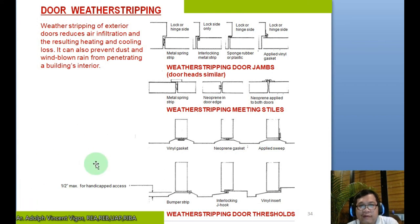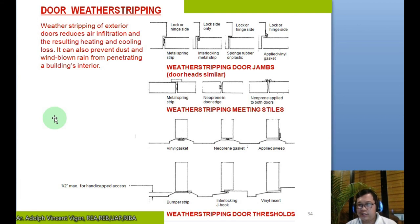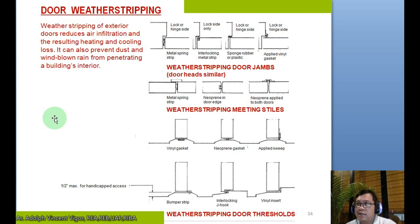Weather stripping of exterior doors reduces air infiltration and the resulting heating and cooling loss. It can also prevent dust and wind-blown rain from penetrating the building interior. For example, if you have an air-conditioned space and do not want the air conditioning unit to use more energy than necessary, you must ensure that the windows and doors are weather-stripped so that the cold air inside does not escape and heat from outside does not get in.